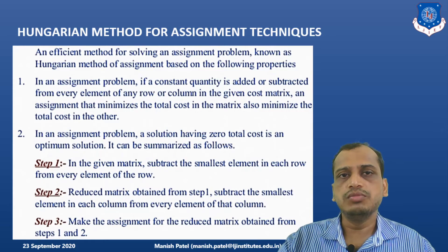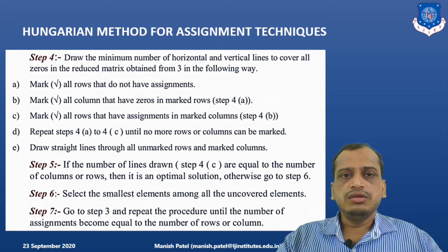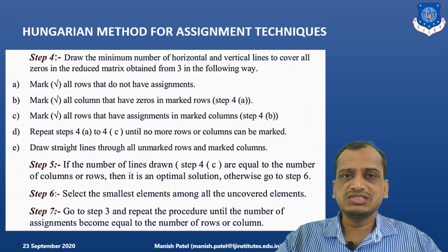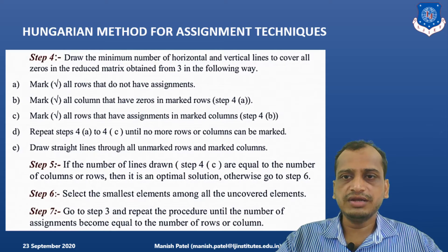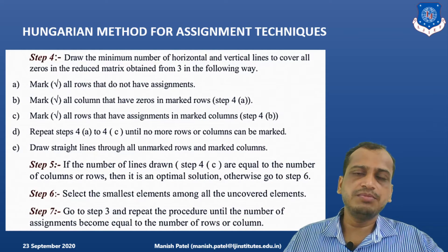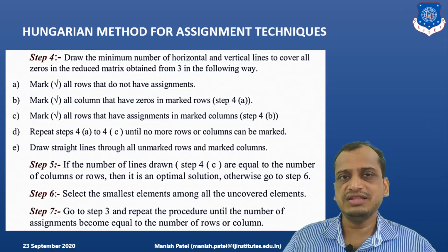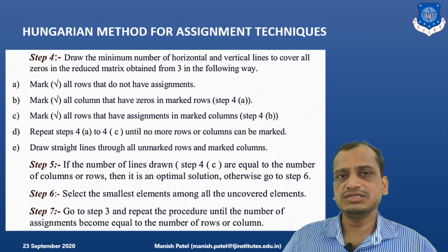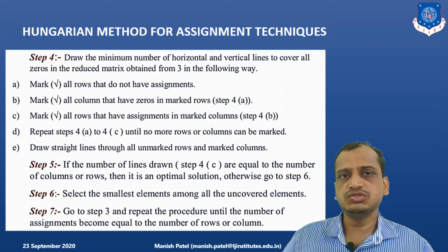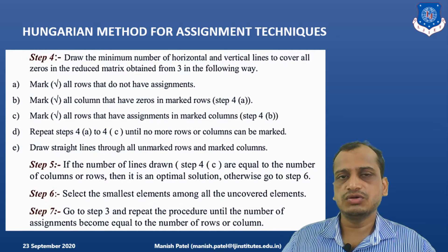The next step is to assign jobs to workers by finding zeros in the modified matrix. For example, if the first row has a zero in the first cell, you assign that job and cancel out other zeros in the same row and column. You repeat this for each row and column until all workers are assigned to jobs.